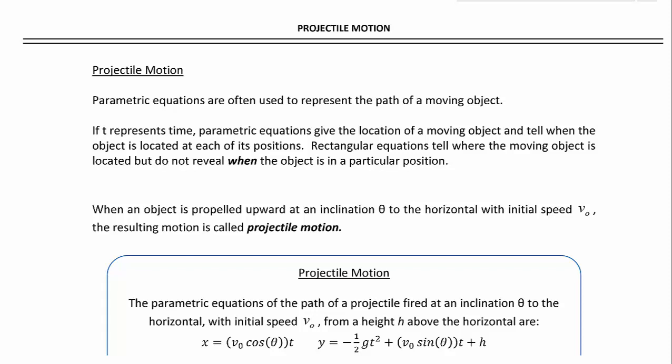This video discusses projectile motion. Parametric equations are often used to represent the path of a moving object. If t represents time, parametric equations give the location of a moving object and tell when the object is located at each of its positions.